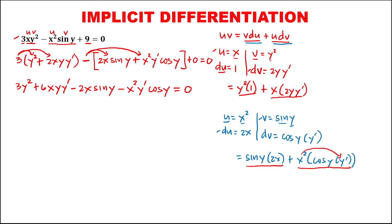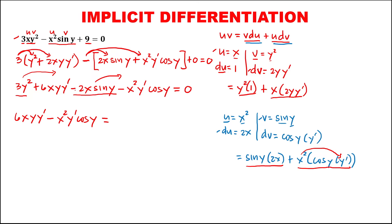Then to solve for y prime, we need to group all terms with y prime. Since this term has no y prime, we need to transpose it to the other side. So remaining on the left side are only the terms with y prime: 6xy times y prime, minus x squared y prime cosine y, then equals — this negative becomes positive — 2x sine y, and this positive becomes negative 3y squared.